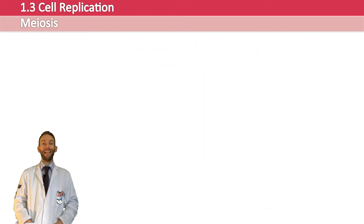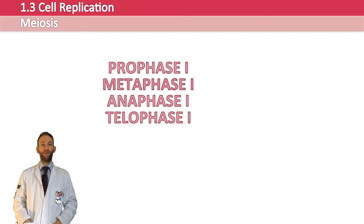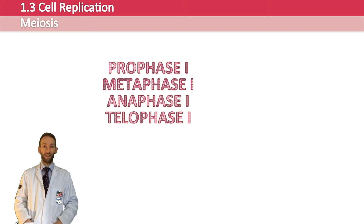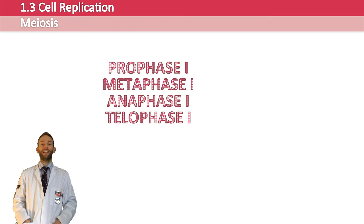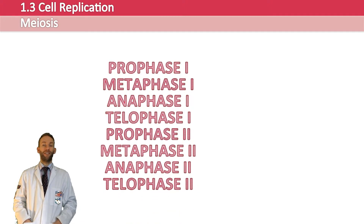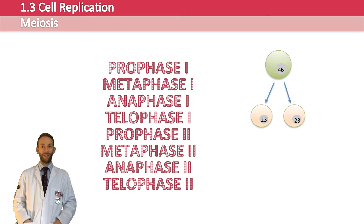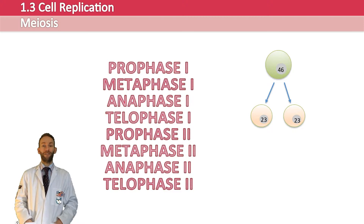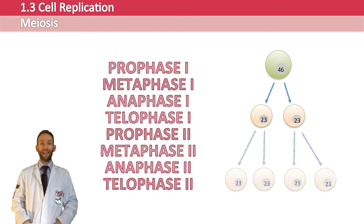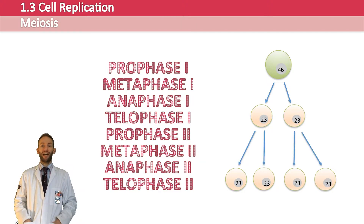We use the same names to describe the stages of meiosis as we do mitosis, but because there are two lots of cell division happening, we have prophase 1 to telophase 1, and then prophase 2 to telophase 2. In the first division you make two haploid cells, and in the second division that's when you end up with four haploid cells.